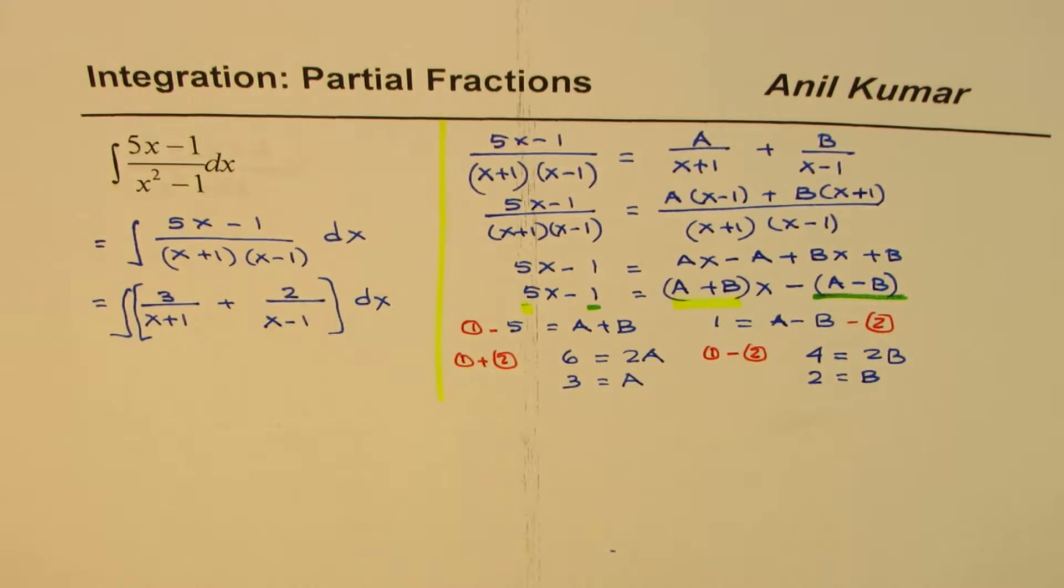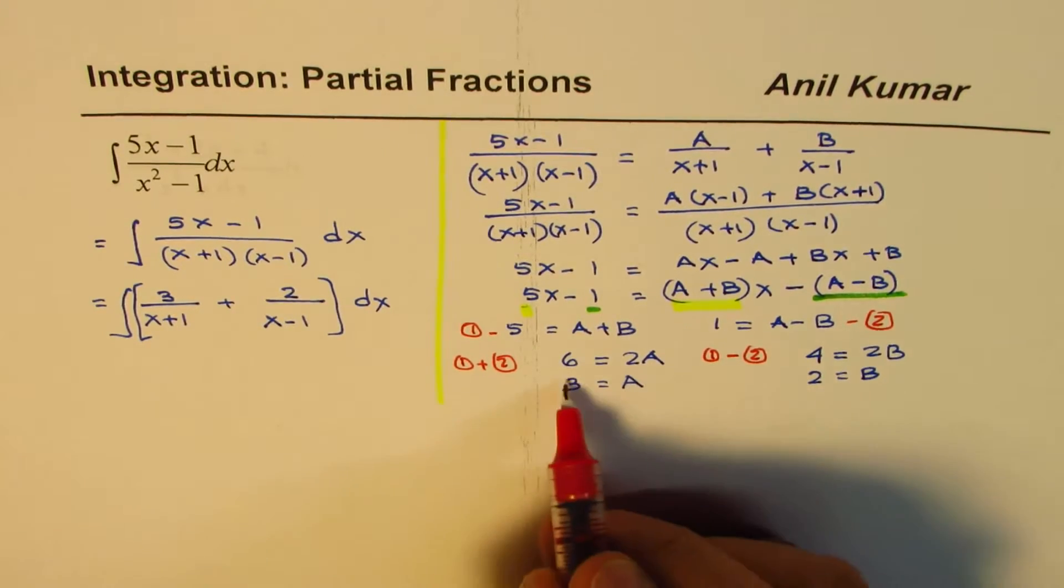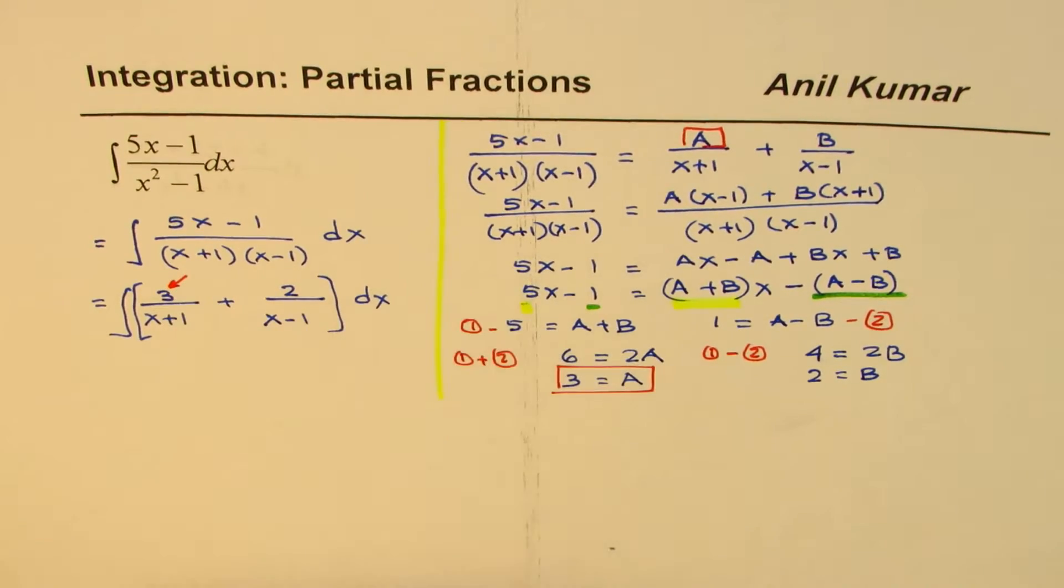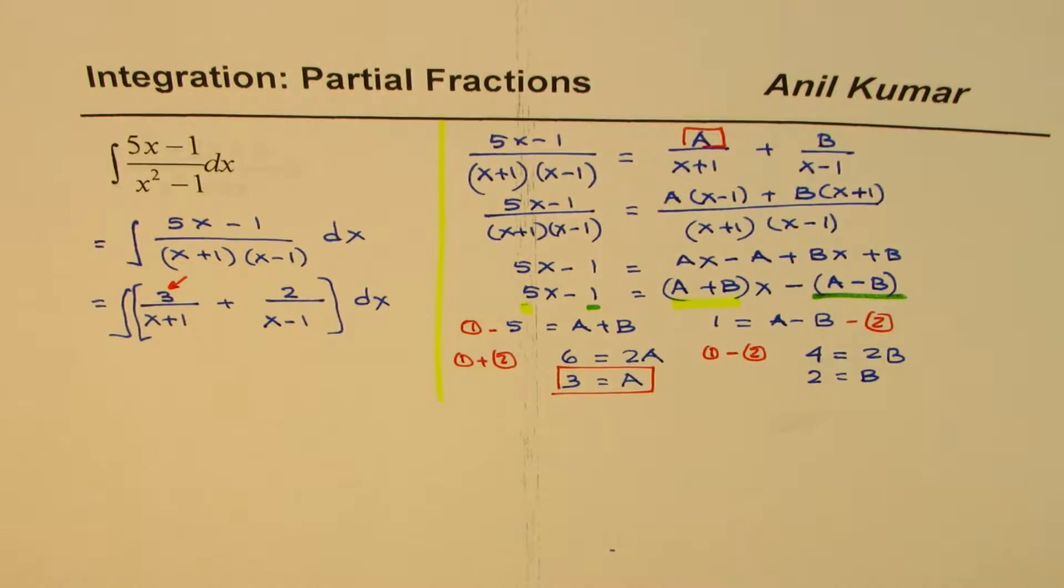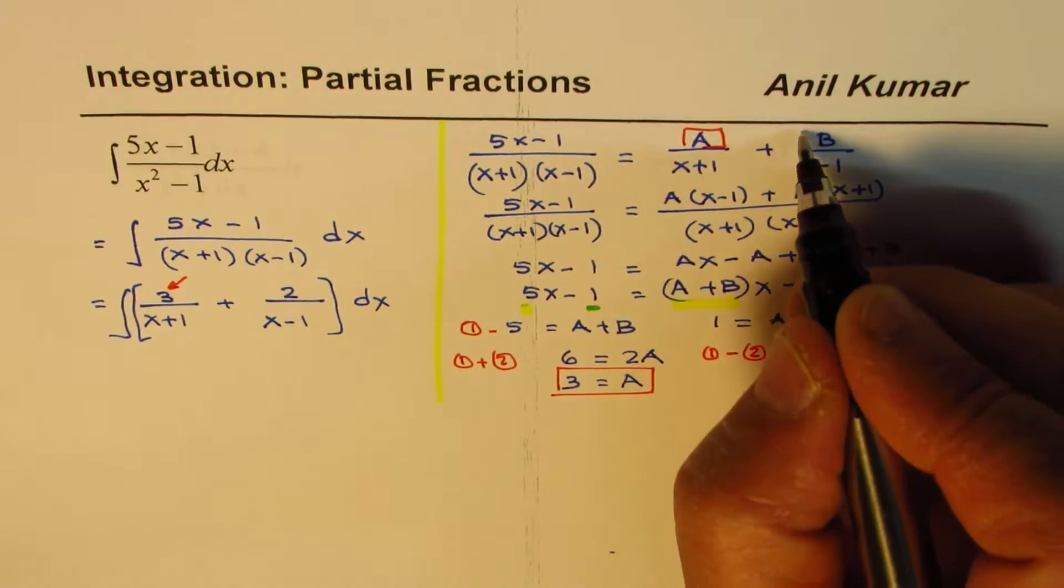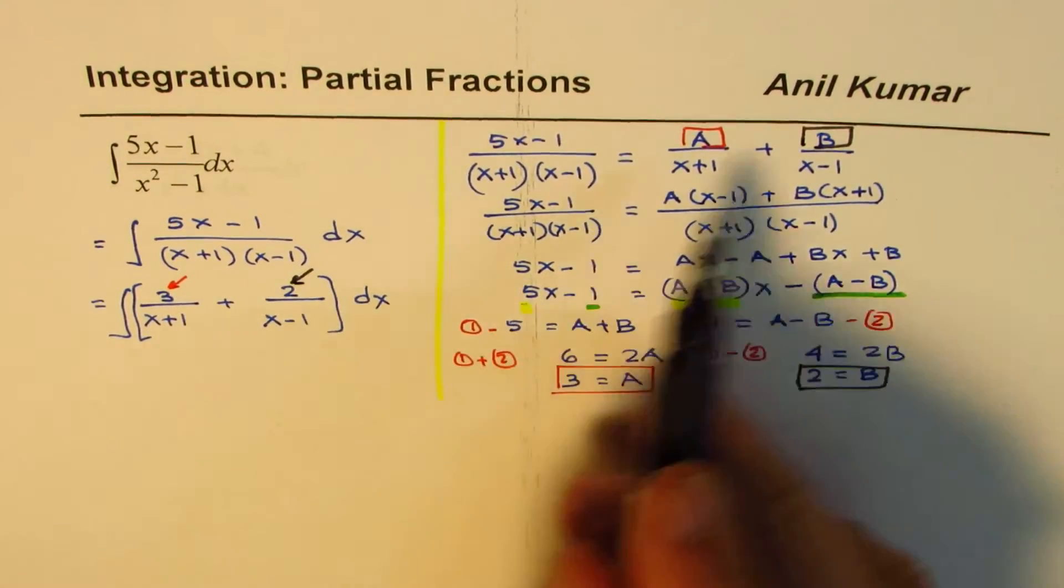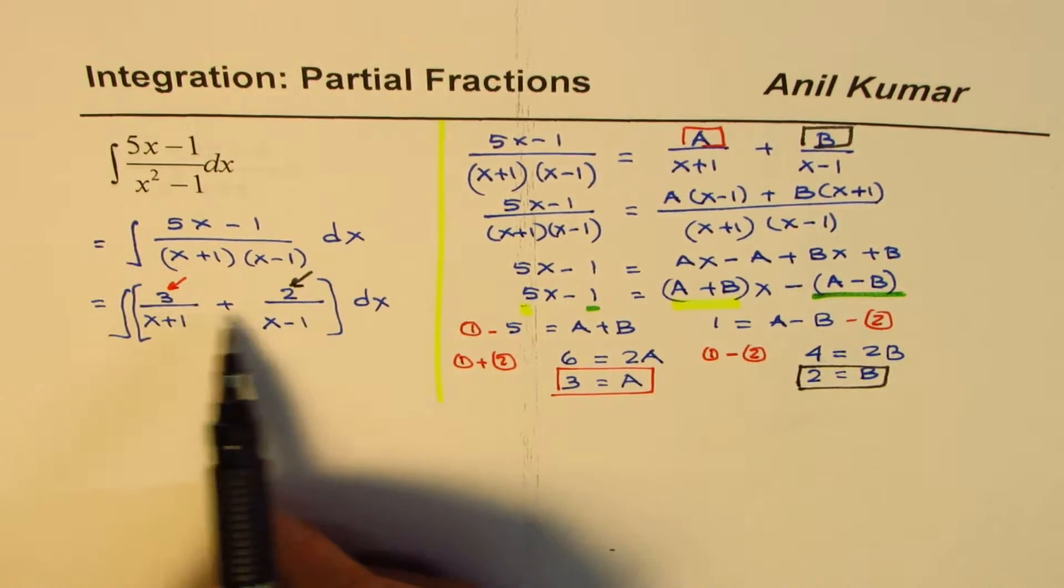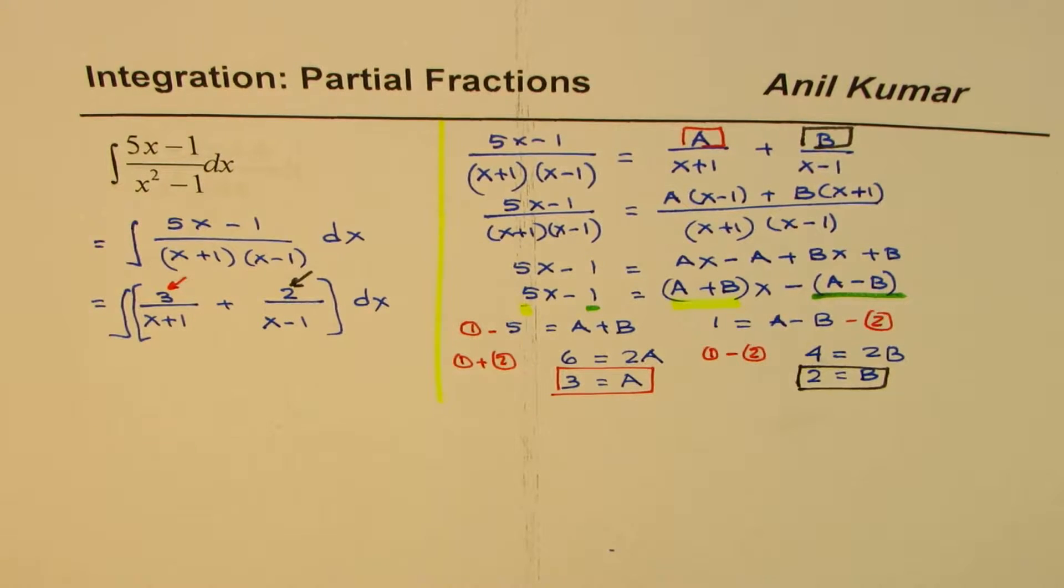So I hope you can correlate. So what we have here is the value of A as 3, which you substituted here. Similarly, we had the value of B, which is 2. So we could write this integral as partial fractions. This method is called partial fractions, and that is what helps us to find the integral.